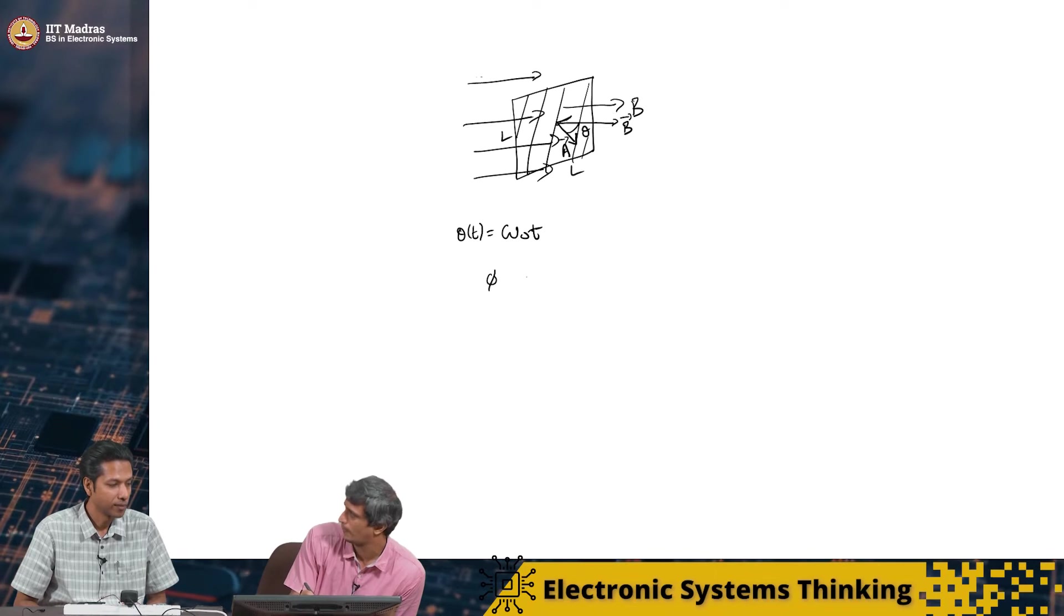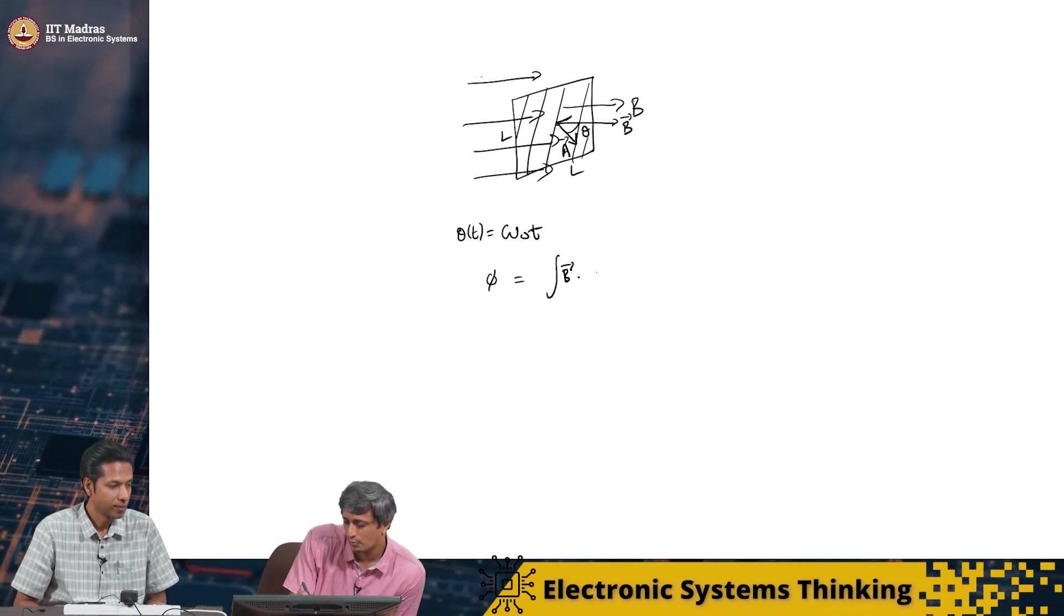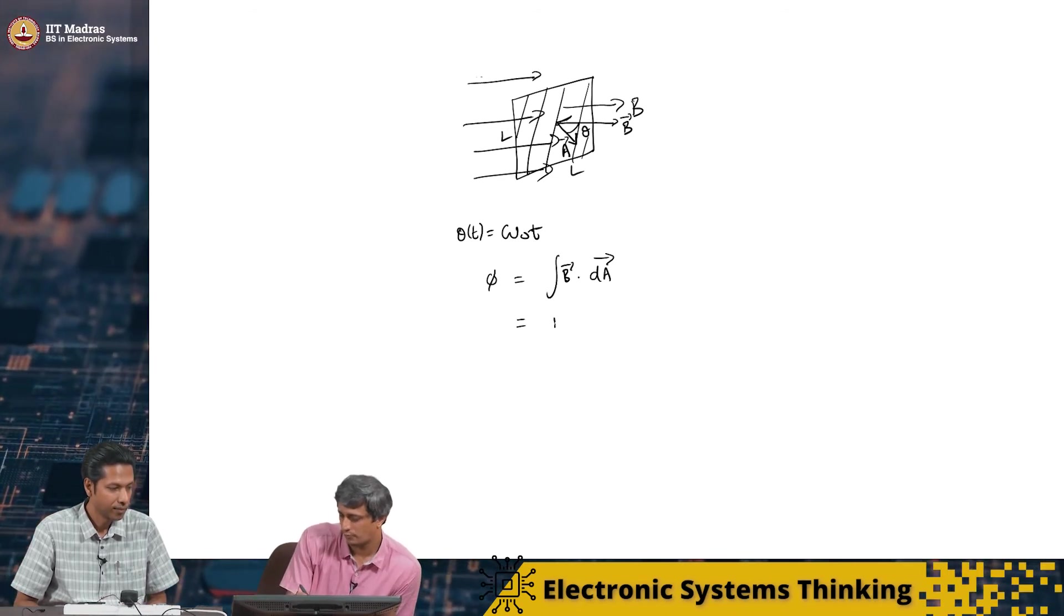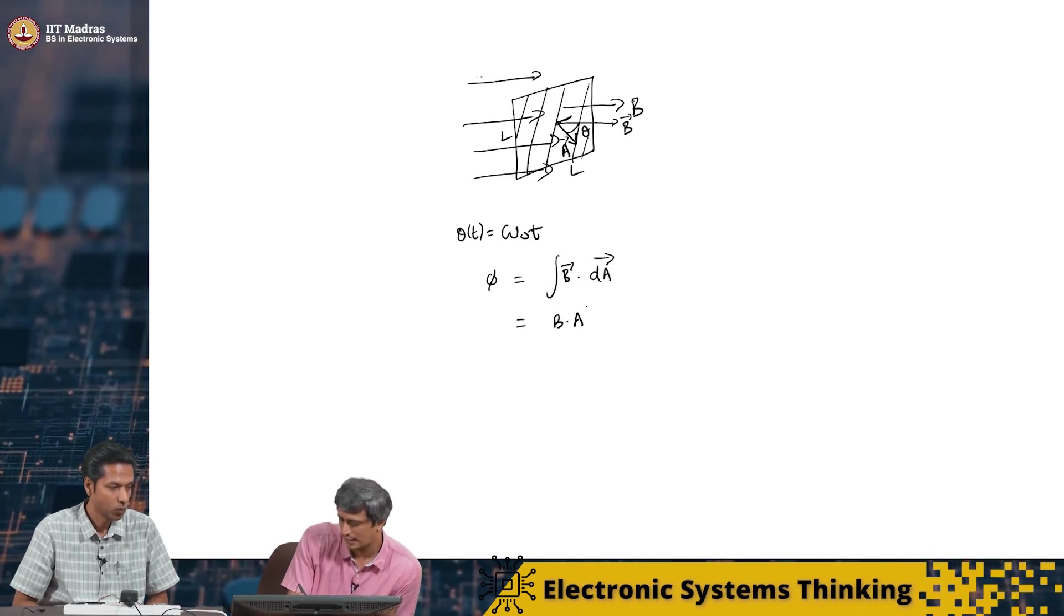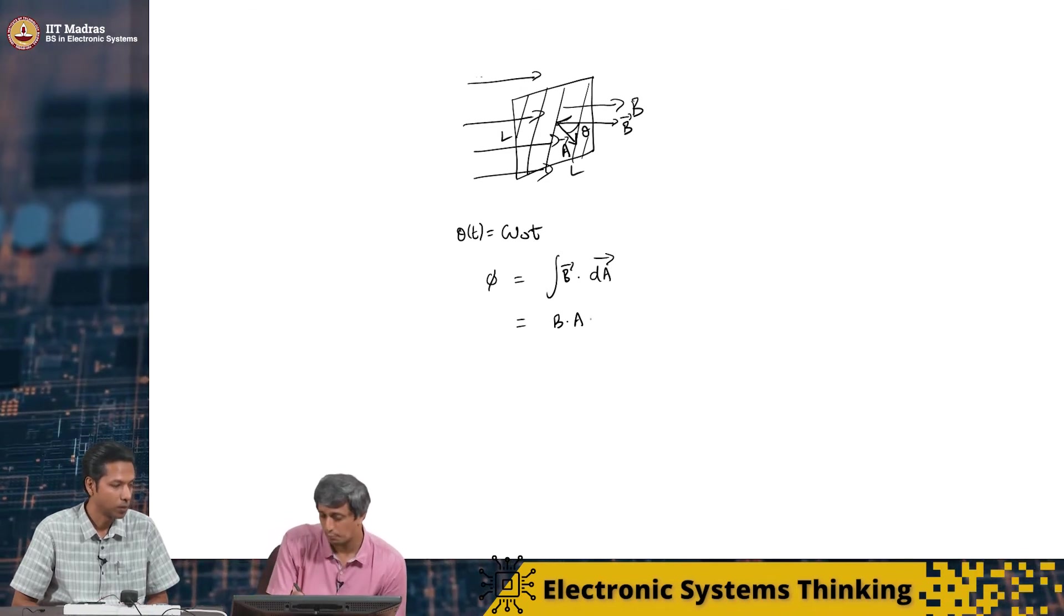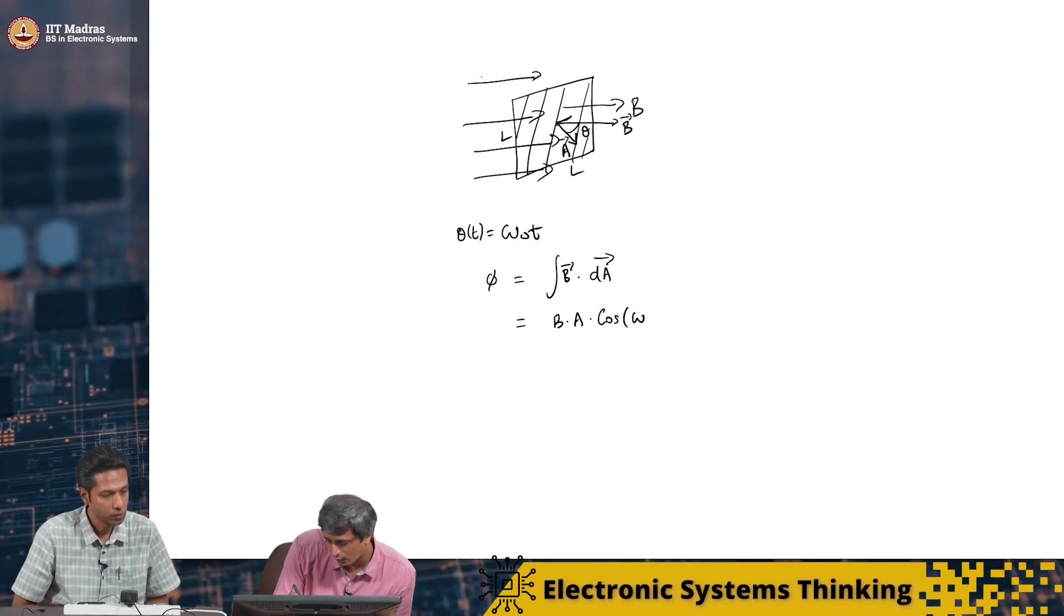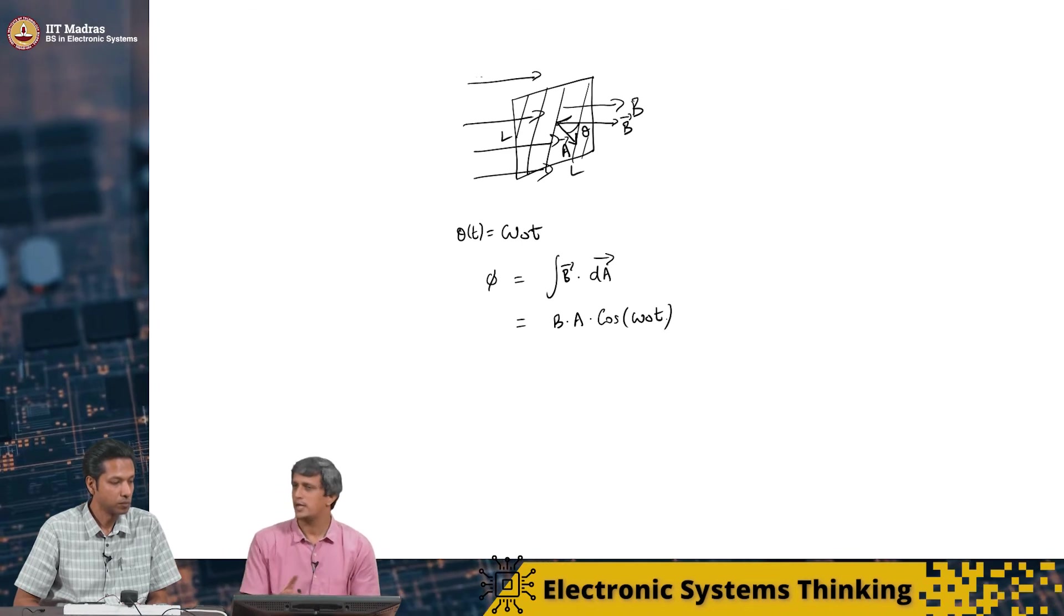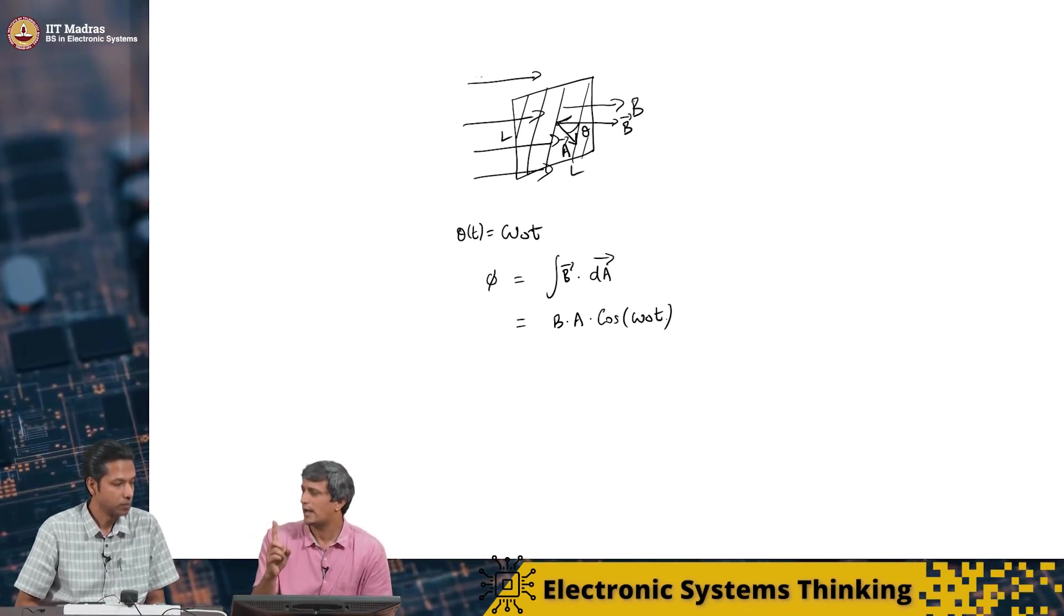So, what happens is, the magnetic flux through this coil is going to be integral B dot dA. Right. And this, the magnitude is constant. Ok. It is B. The area is also constant. The value is constant. But, the vector angle keeps changing. So, this will be cos of omega naught t.